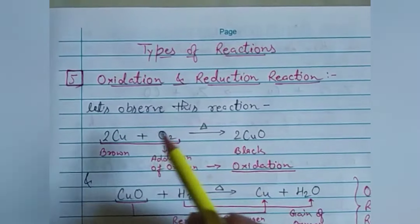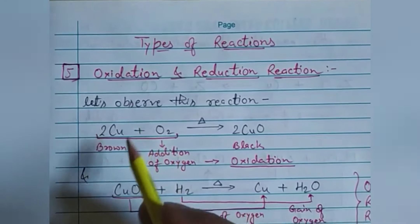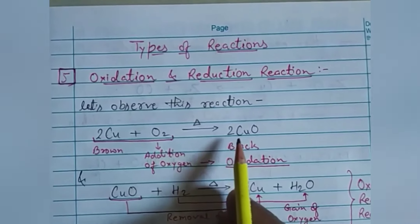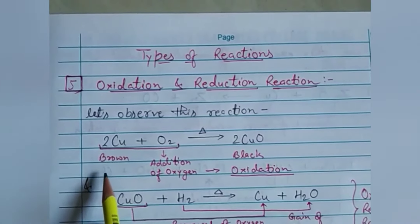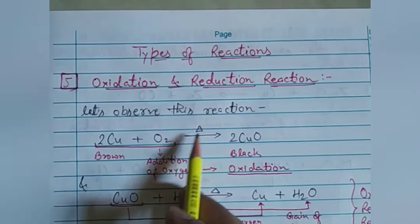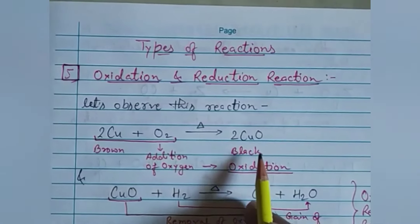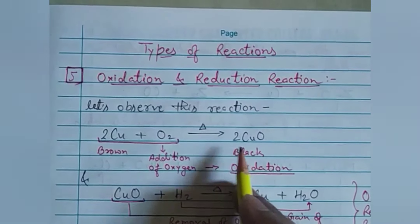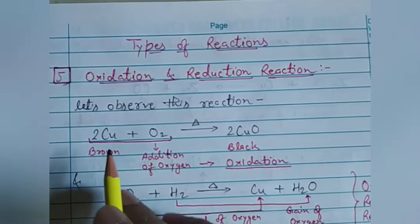Consider this reaction: 2Cu + O₂ on heating becomes 2CuO. Copper metal is of brown color and has shine. When it is burnt in the presence of air, the copper and oxygen combine together and form a black substance called copper oxide — going from brown to black.